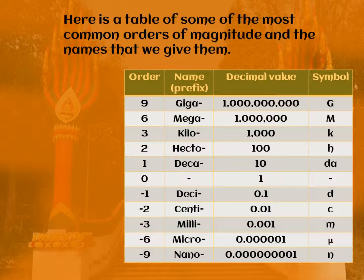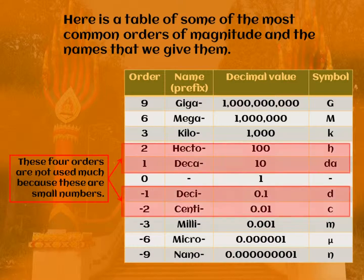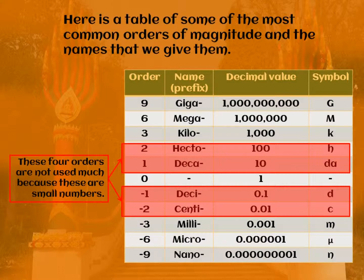The four orders in the middle — hecto, deca, deci, and centi — are not used very much, because these represent small numbers and people don't mind just saying 100 metres rather than one hectometre. Centi does get used sometimes — centimetres and centilitres are the main examples. But mostly we stick to the orders of three and above.